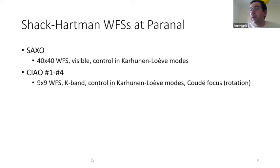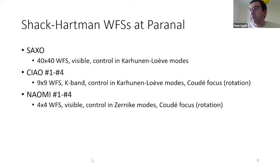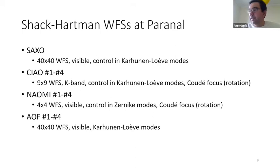Then you have the CIAOs, which work in the infrared, and the sampling is not so good. They are analogous to NACO in the infrared. You have the NAOMIs, where you have really not very good sampling, but they are spread over the platform as CIAOs. These are the adaptive optics feeding the small AT telescopes. And you have the AOF with four wavefront sensors in a single telescope.